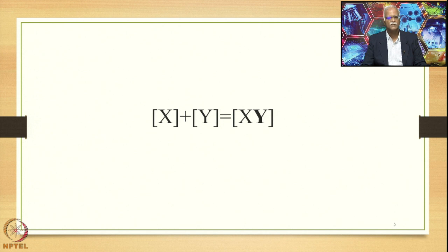In xy, the element y acts as the head — this is the speciality of the Tatpurusha Samasa. When xy is part of a sentence and is interrelated to any other external word, it is only through y that this interrelation is possible. When x is related to any other external word without going through y, such a Samasa is considered an exception and noted as a Samartha Samasa.